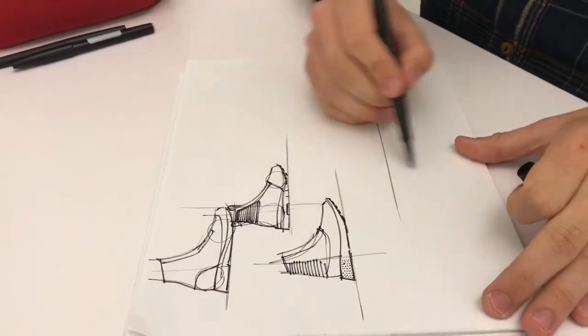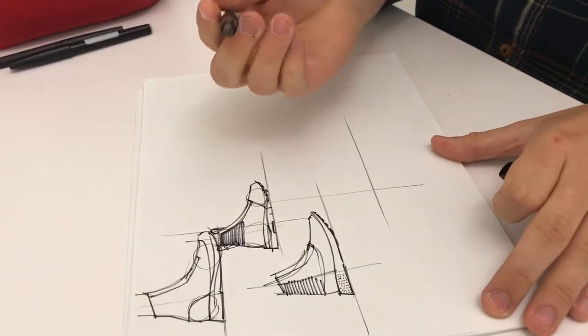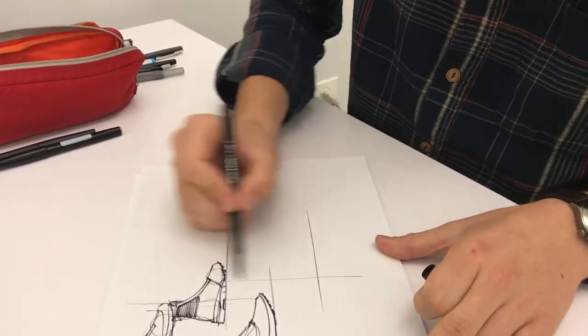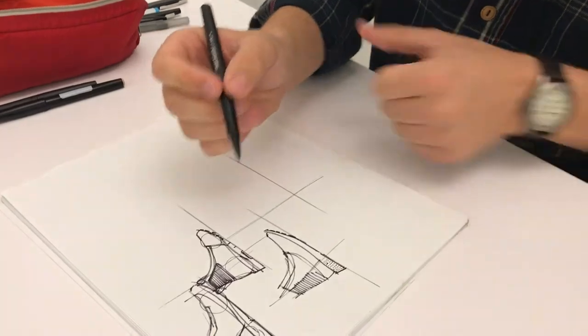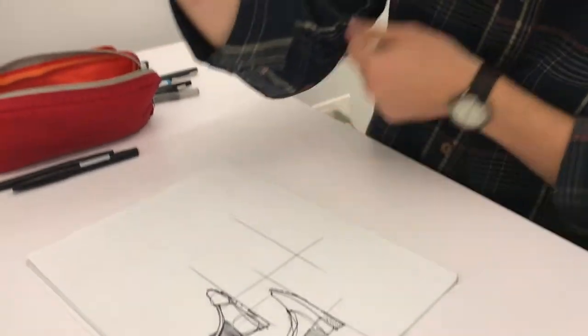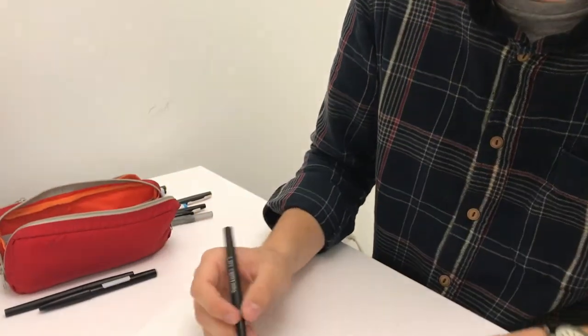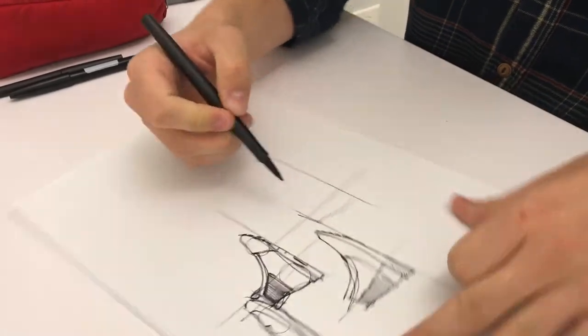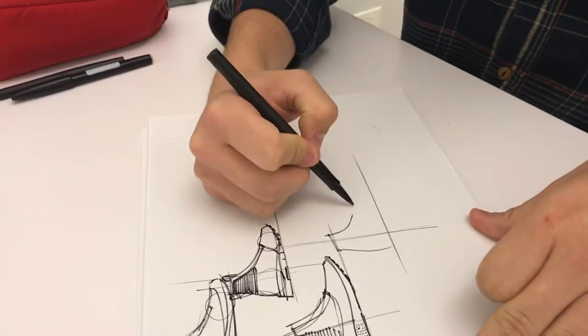Another tip that he showed me was when he's throwing straight lines he holds his pen farther back like this and it's all about sketching either from your elbow or from your shoulder rather than your wrist. And that totally transformed how I sketched at that time.